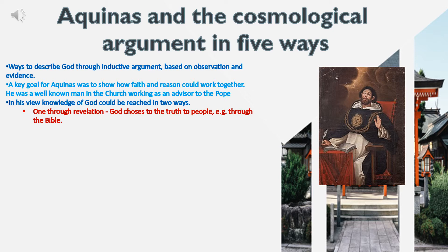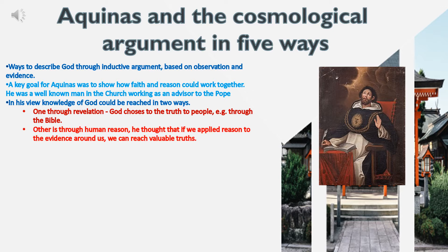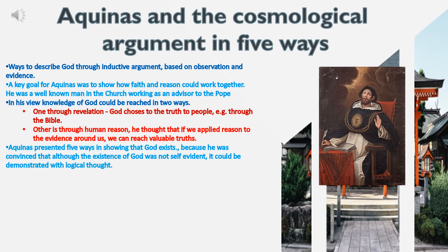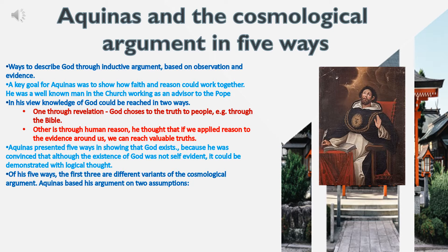One way is through Revelation, for example through the Bible. The other is through human reason — he thought that if we applied reason to the evidence around us, we can reach valuable truths. Aquinas presented five ways of showing that God exists, because he was convinced that although the existence of God was not self-evident, it could be demonstrated with logical thought. Of his five ways, the first three are different variants of the Cosmological Argument.